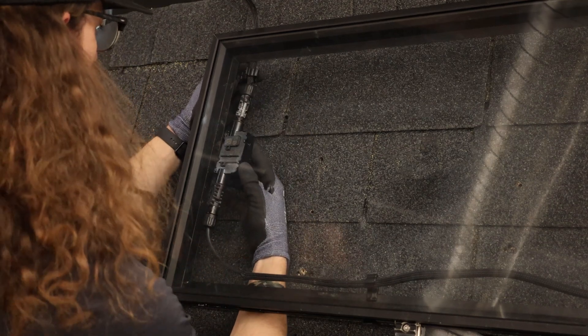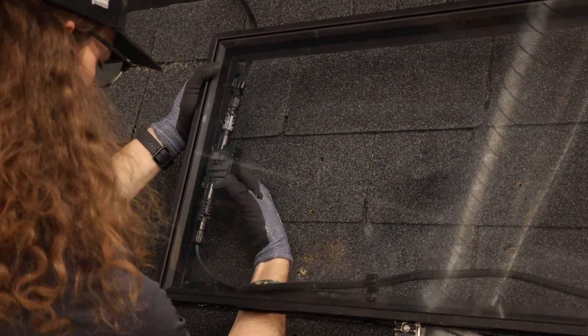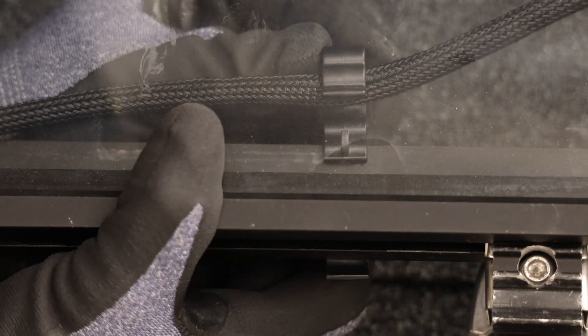After they are connected, MCIs are secured under the array with a wire management clip on each side, keeping it off the roof surface and out of sight.